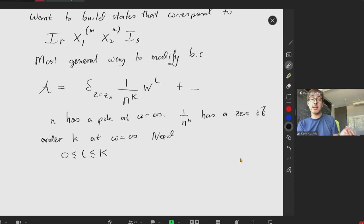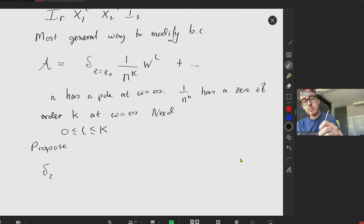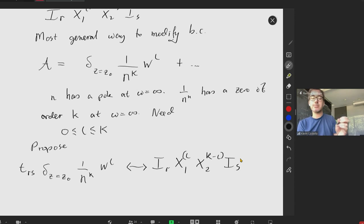Well, this is perfect because these are exactly states with the right quantum numbers to match the states we see in the chiral algebra. So we propose on the holographic side, up to some numerical factor, corresponds to Psi or X1 to the L, X2 to k minus L, in the chiral algebra. In key states, I have the same quantum numbers.